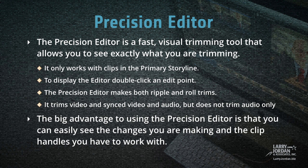The Precision Editor is a fast visual trimming tool that allows you to see exactly what you are trimming, but it only works with clips in the primary storyline. To display the editor, simply double-click an edit point. The Precision Editor can make both ripple and roll trims. It trims video and audio synced to video, but doesn't trim audio by itself. The big advantage is that you can easily see the changes you are making and the clip handles you have to work with.